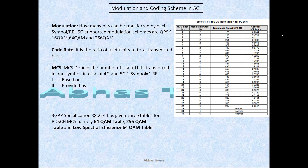Let's understand what code rate is. Code rate is the ratio of useful bits transferred to the total bits transferred. For example, if you have 10 bits total capacity, some bits are CRC bits, some are forward error correction bits and other signaling bits — not user data. So code rate equals user data divided by user data plus those redundant or coding bits.